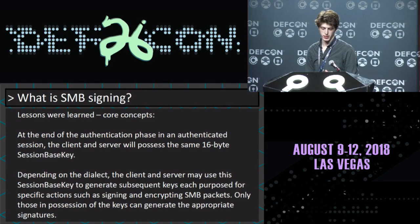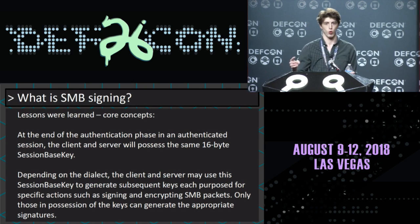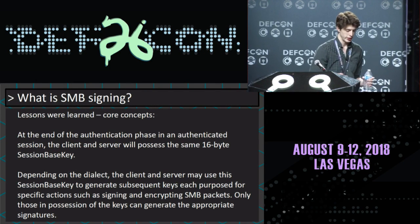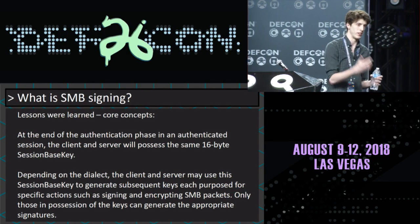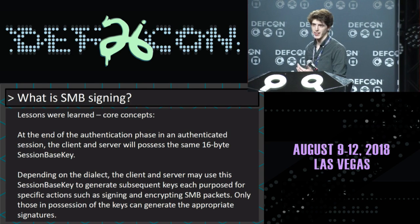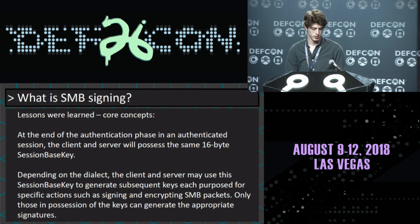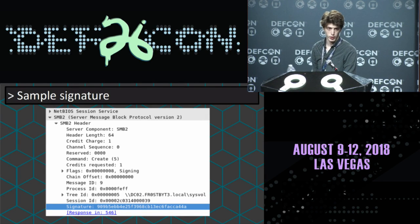At the end of the authentication phase, both the client and the server will share the same session-based key — just a 16-byte value. They then use that value to generate other keys to sign the messages. The goal of what we're about to cover is: where does that key come from, and how can we compromise it? That's what a signature looks like for anyone who hasn't used Wireshark on a DC.